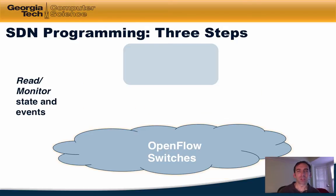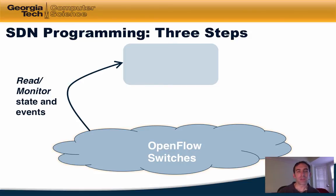Developing better abstractions for SDN programming involves recognizing that this programming involves a control loop that effectively has three steps. If we have a network of OpenFlow switches and a controller, the first step is that the controller must be able to read and monitor the network state. It must also be able to monitor for events that change the network conditions, such as changes in traffic load, security events, and so forth.